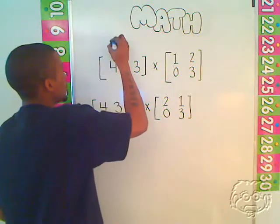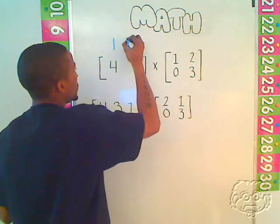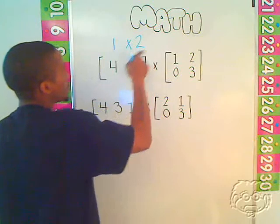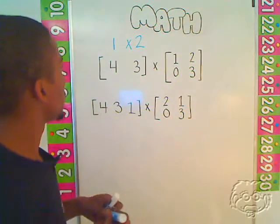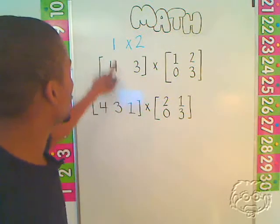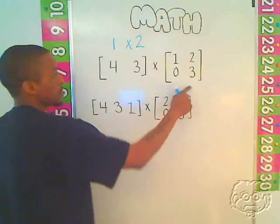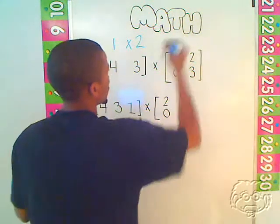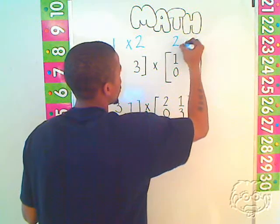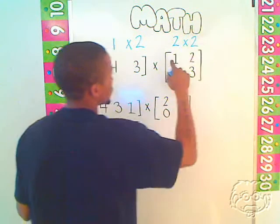This is a 1 by 2 matrix, or a 1-2 matrix. It has one row but two columns. This is a 2-2 matrix. It has two rows and two columns.